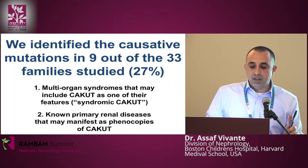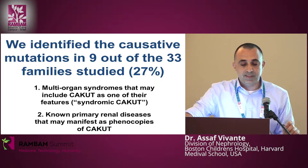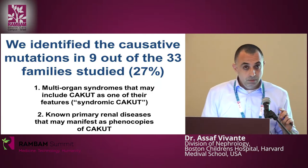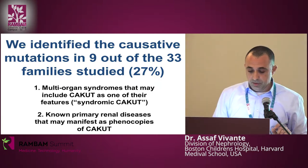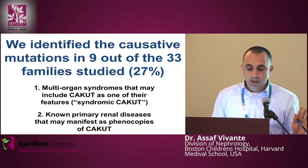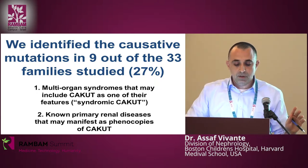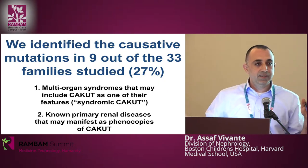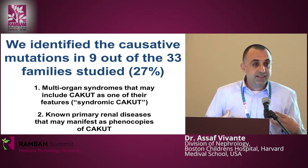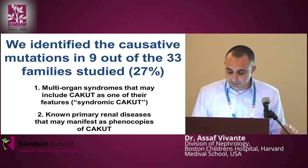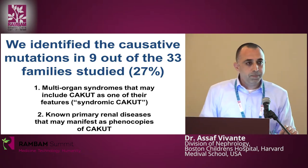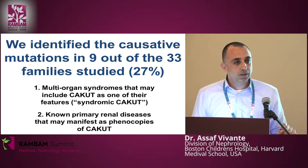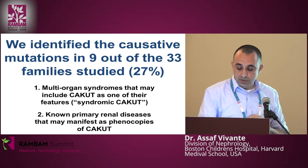We identified a causative mutation in nine out of the 33 families we studied. When we looked back at those genes, we were able to categorize them into two different groups: one group of multi-organ syndromes that may include CAKUT as one of their features — referred to as syndromic CAKUT presenting as apparently isolated CAKUT cases — and the other group of non-primary renal diseases that may manifest as phenocopies of CAKUT.